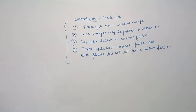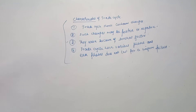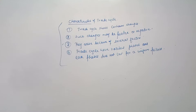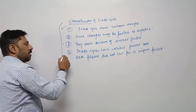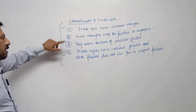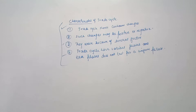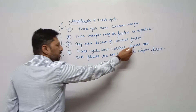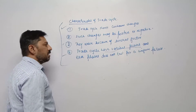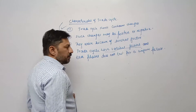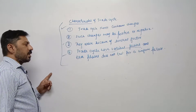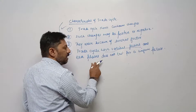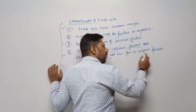Trade cycle shows continuous changes — it brings different changes: prosperity period, then recession period, then boom period, then recovery period. The first and last points are almost the same and interlinked. Trade cycle shows continuous changes and trade cycle have various phases. There are four phases in total: first, prosperity period; then recession period; then depression period; then recovery period. Each phase does not remain for a uniform period.